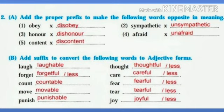The word 'sympathetic' becomes 'unsympathetic' by adding 'un'. Similarly: Honor becomes Dishonor, Afraid becomes Unafraid, Content becomes Discontent. In this way we can make antonyms of the given words by using prefixes.